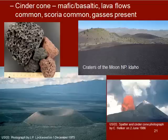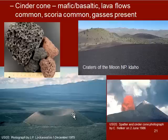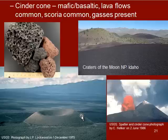The next type are cinder cones. These are also mafic or basaltic, and we see lava flows associated with them, but we get this smaller cone shape — the smallest volcanic feature that we see. We have this cone shape because there are lots of gases present in the magma as it rises to the surface, and when it erupts, the gases are released, producing a slightly more explosive eruption and developing cinders. Here you can see a cinder cone erupting.